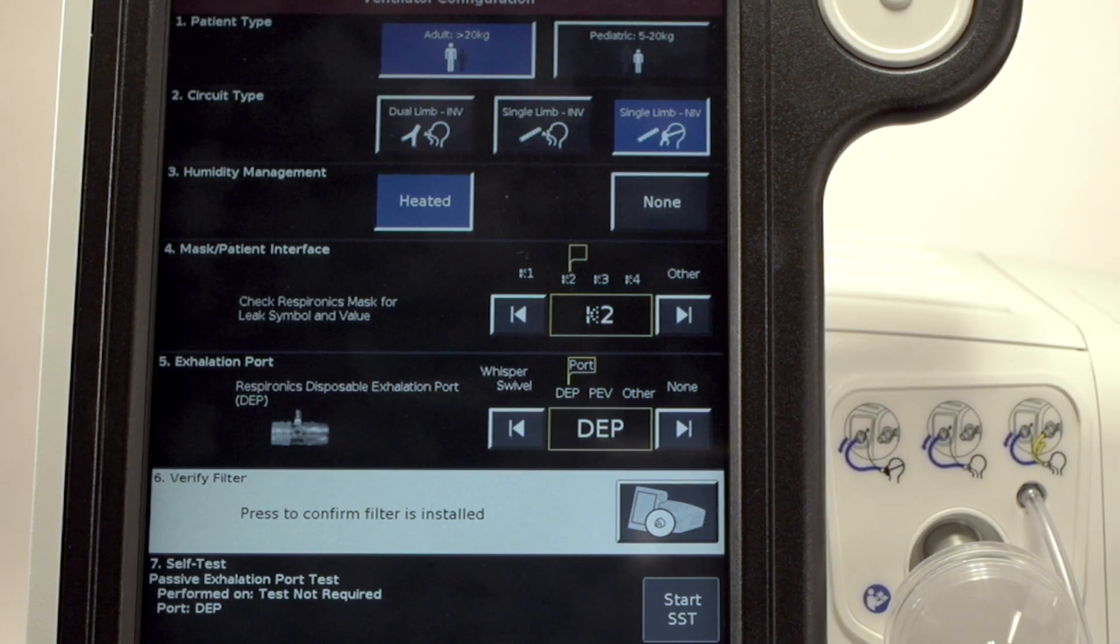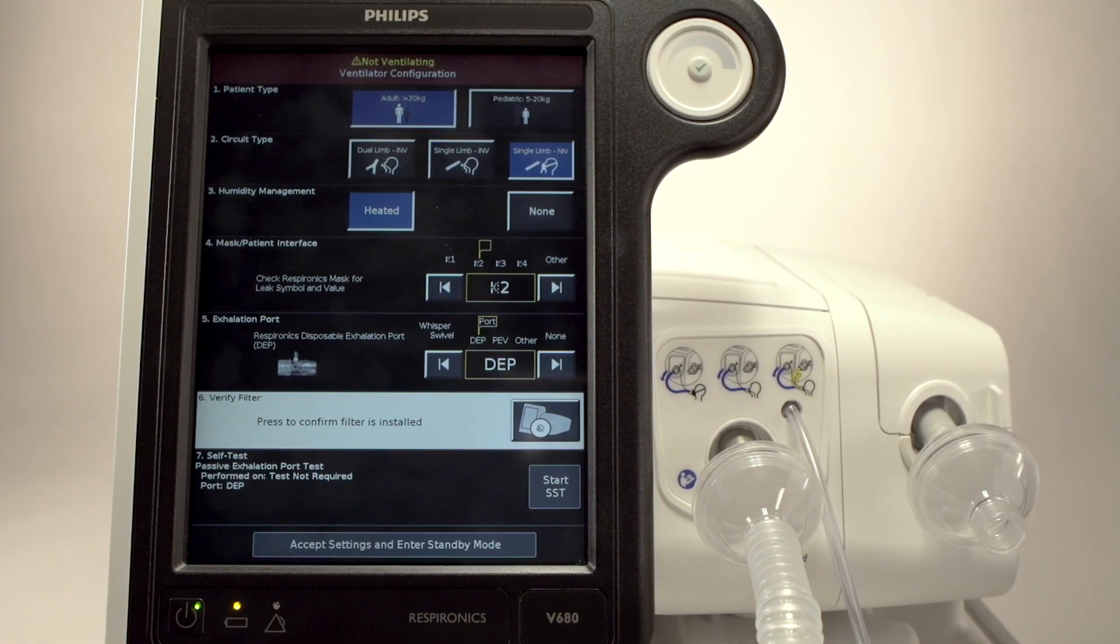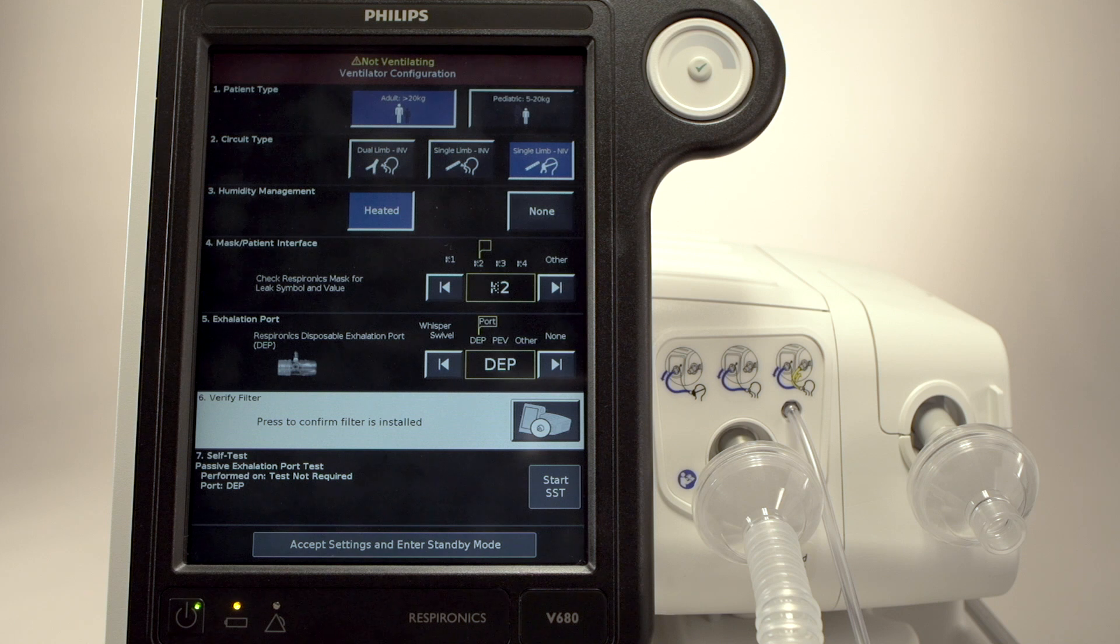Confirm you have filters installed and touch the Start SST button if you are using a mask and circuit other than one from Philips Respironics. If you are using a Philips Respironics mask and DEP circuit, you can skip the SST if you don't need to check the function of a remote alarm.